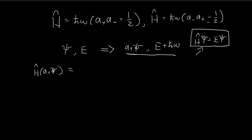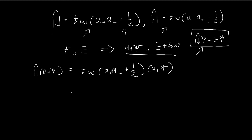In order to prove this, let's work through the Schrödinger equation to see whether both sides match. I'm going to apply the Hamiltonian operator to the function a-plus ξ. If what I claimed is true, I'll end up with an expression equal to E plus ℏω times the function itself. To do this, I'm invoking the result from last time — this definition of the Hamiltonian operator — using this particular form for a special reason you'll see later.